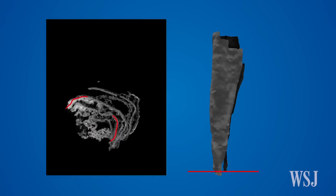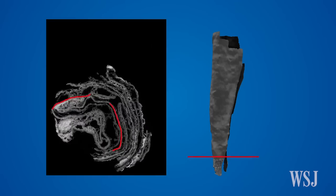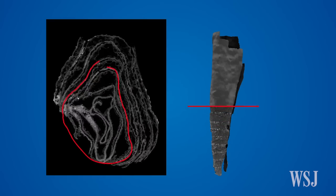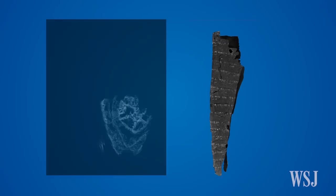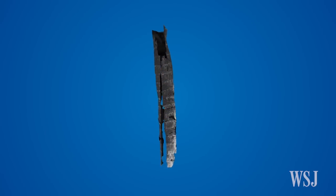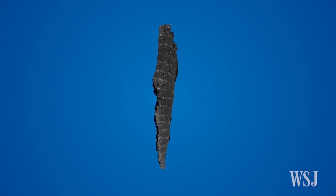Next we extract the ink from the data in a process called texturing, revealing the text on the scroll. However, because the surface is curved, it's difficult to read all of the text from one viewpoint.